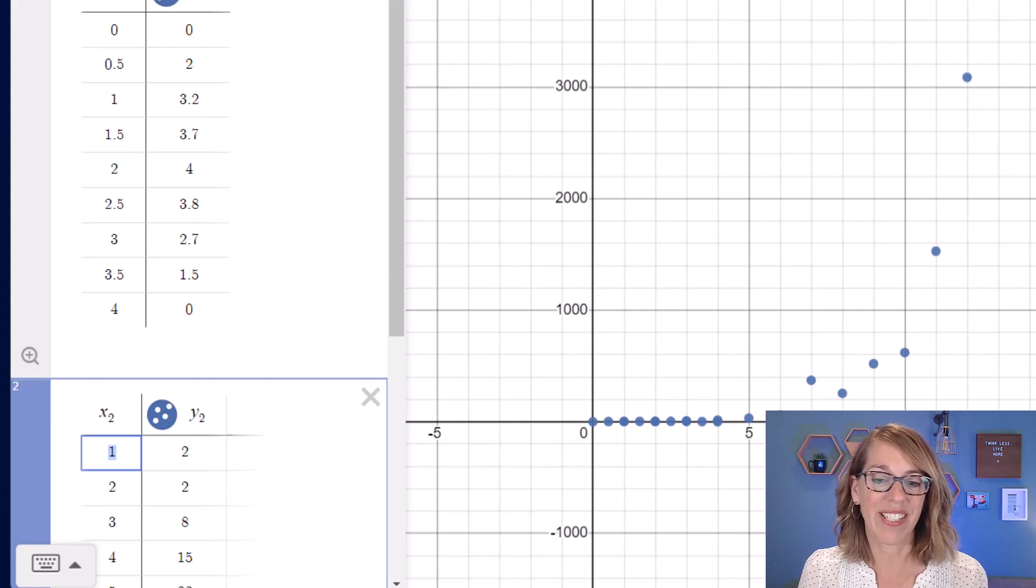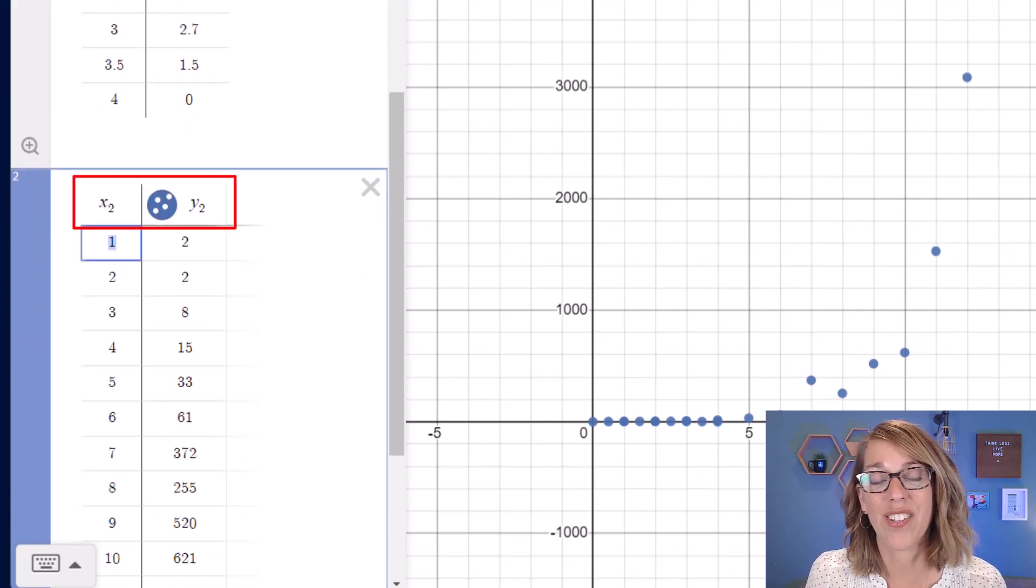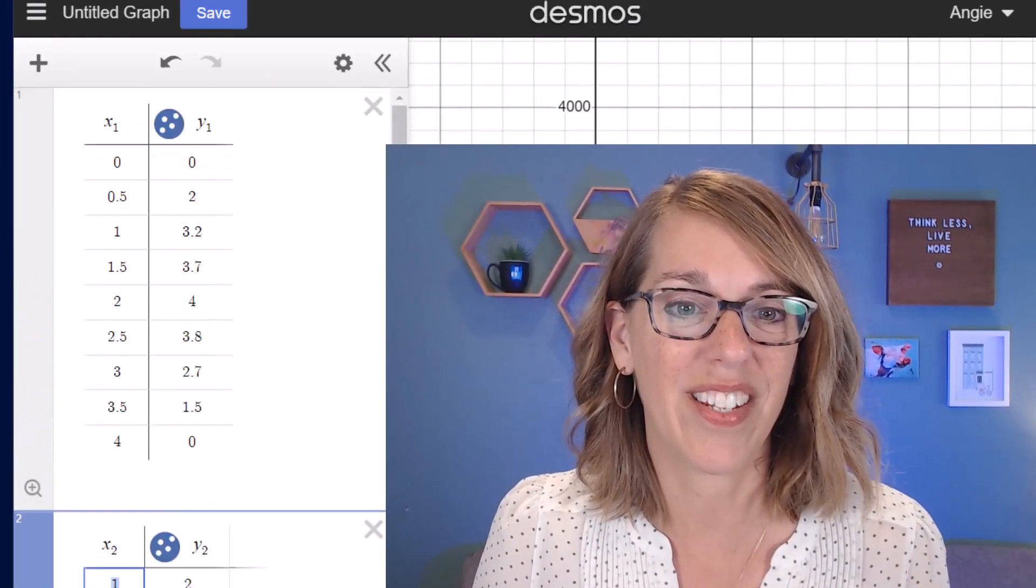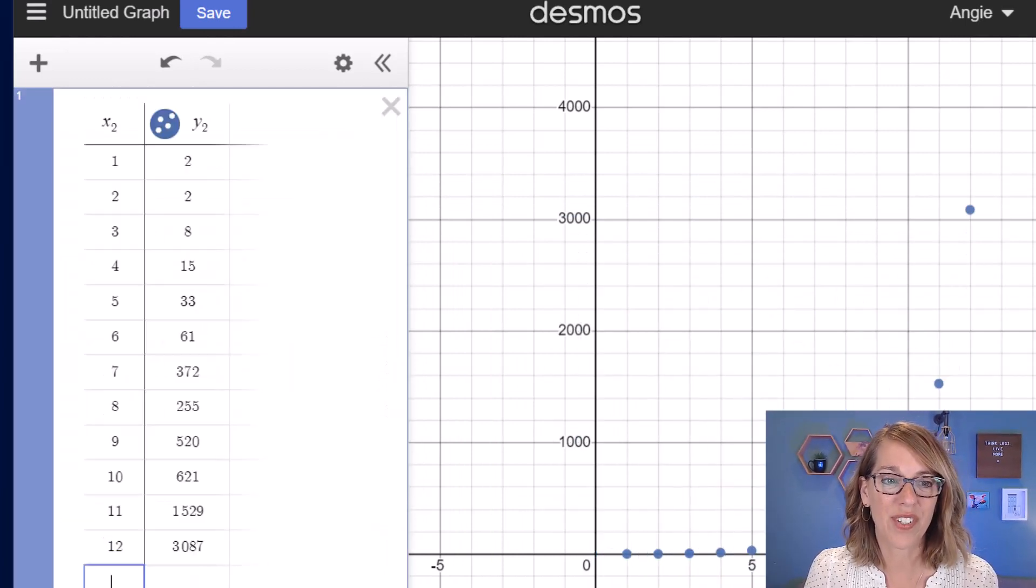You'll notice this time it's given me my data, but it's labeled them x2, y2. This is a really common mistake. Make sure you're grabbing the subscripts of the table. Let's go ahead and get rid of that first table.